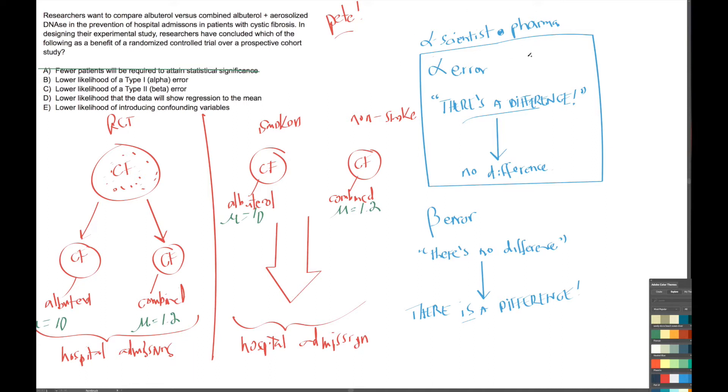Now that we know what alpha and beta errors are, let's think about the question. In either type of study—whether we do an RCT or prospective cohort study—we have to come to a conclusion, and our conclusion is going to be that one group did better than the other, or they didn't.